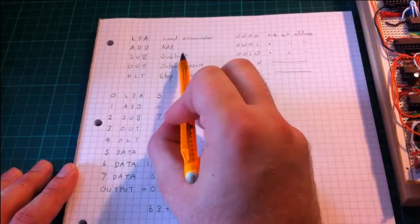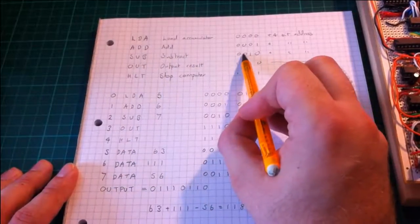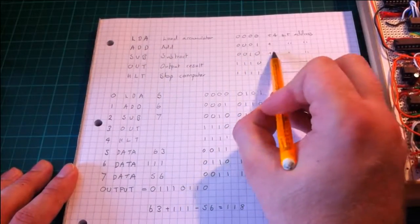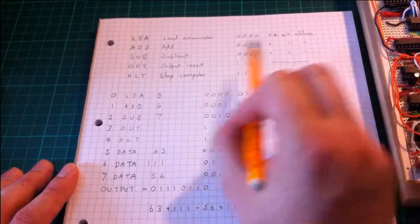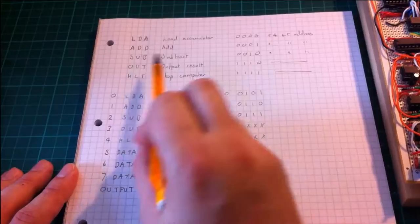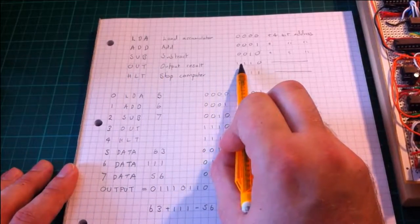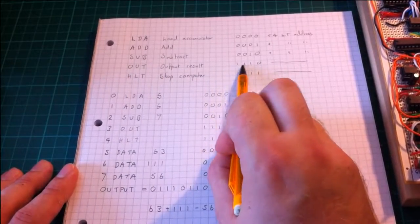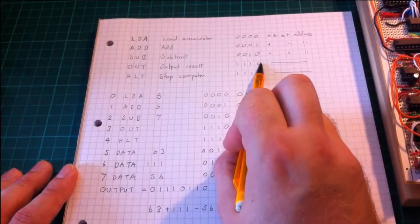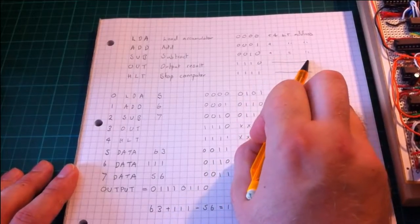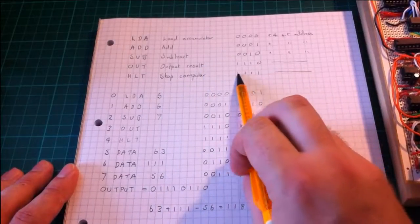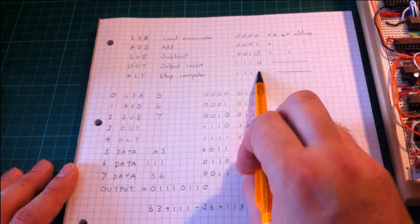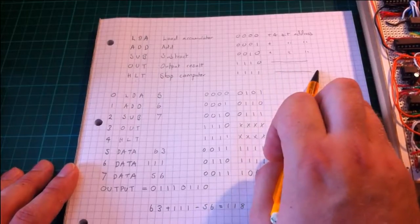In the same way, subtract is given with the opcode 0010 with the 4-bit address of a number to be subtracted. And then OUT outputs the result, given by opcode 1110 and doesn't need a 4-bit address. And HALT stops the computer, has the opcode 1111, and again doesn't need an address.